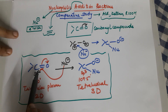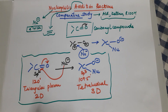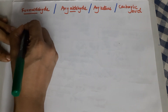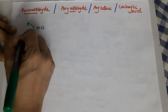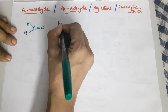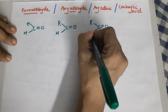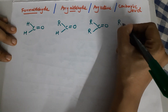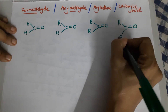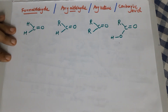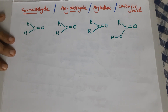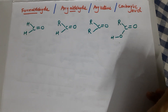Now I will start the comparative study of the reaction. The compounds being compared for reactivity are: formaldehyde (methanal), any aldehyde with an R group, any ketone which has two R groups, and a carboxylic acid. If you need help with structural formulas, please watch the video on IUPAC nomenclature for aldehydes, ketones, and carboxylic acids.